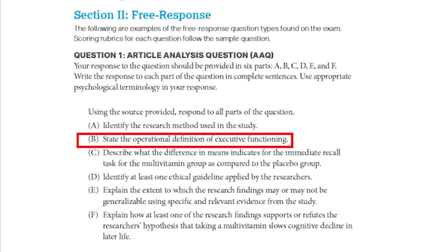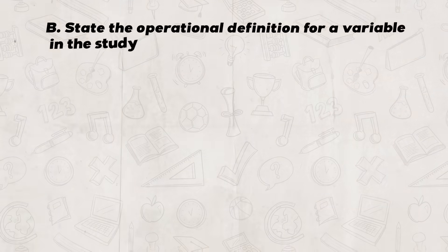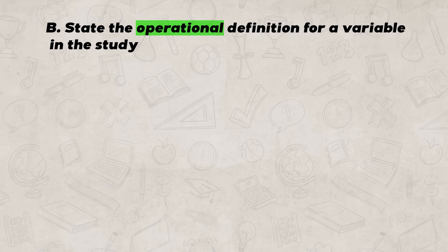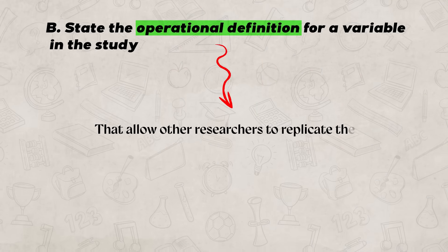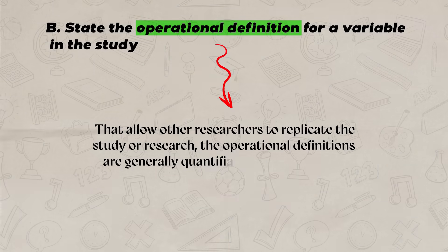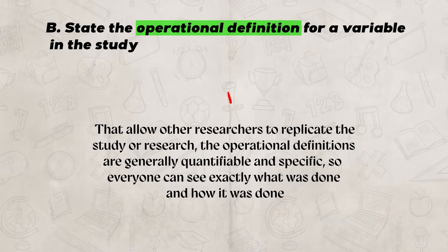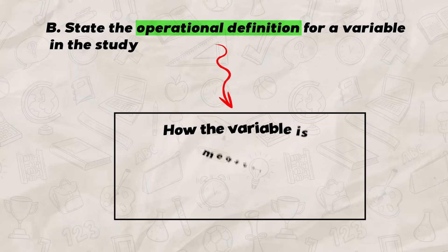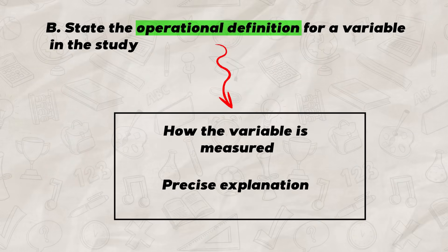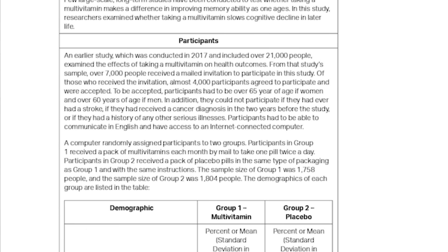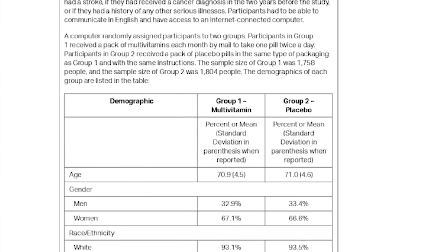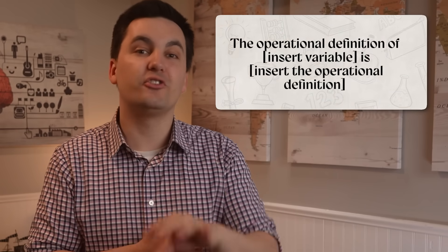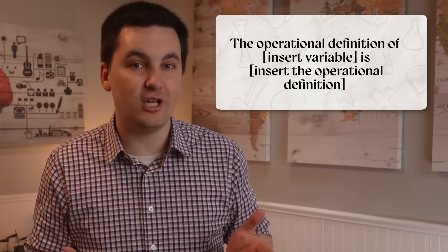After Part A, you move on to Part B, which will have you state the operational definition for a variable in the study. Operational definitions are specific definitions that allow other researchers to replicate the study — they are generally quantifiable and specific so everyone can see exactly what was done and how it was done. For Part B, you need to state how the variable is measured. The nice thing is that the AAQ will actually give you the answer you need — you just need to find it and copy it over in a complete sentence.